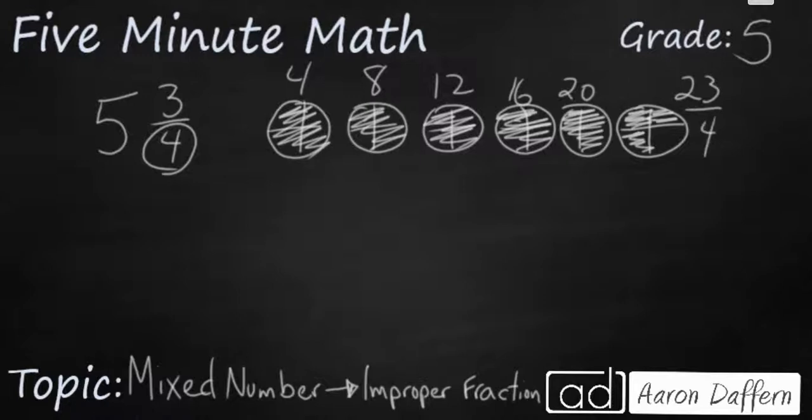So that improper fraction is equal to 5 and 3/4. Let's see if we can do it without drawing a picture.